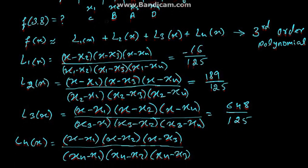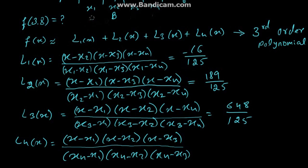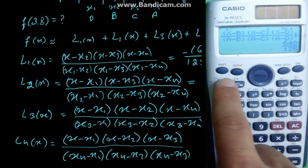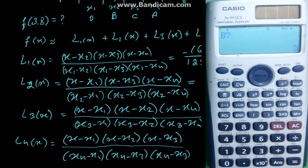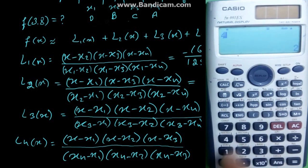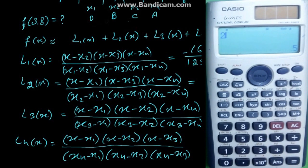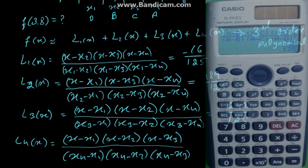Now to find L4 of x, exchange a with d for x1 and x4. x is the same, b is 3, c is 4, now d, a is 2, and a is 5. So here, y is 3, we get minus 18 divided by 125 is L4 of x.